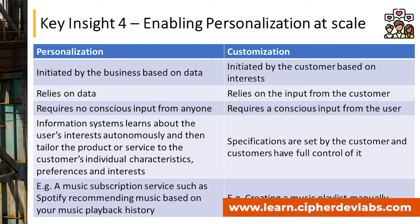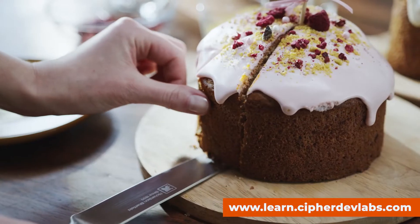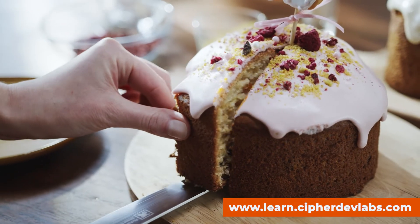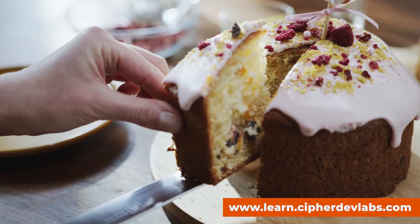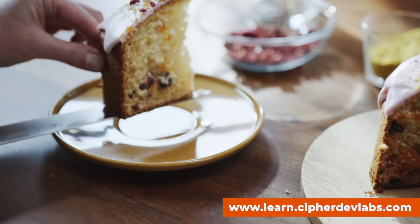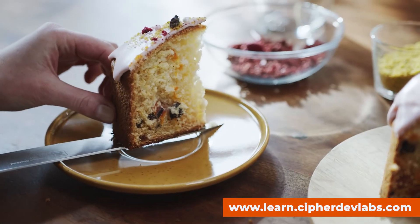Customization requires a conscious input from the user — the customer must say 'these are my interests, these are what I like to watch.' But Personalization requires no conscious input from anyone. It's usually done through information systems that collect data and aggregate it to create a much more personalized profile for each and every single customer.